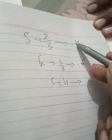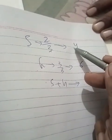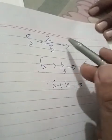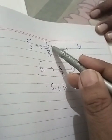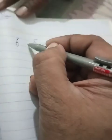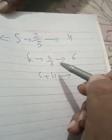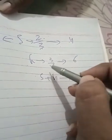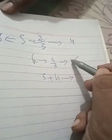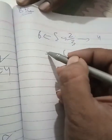So yeh bahut asan hoga. 3 se multiply karenge, 2 se divide karenge 4. So 4 ko 2 se divide karenge 2, 3 times 6. Sita ko lag gaye 6 days. Gita ko kitne din lag gaye? 6 ko 5 se multiply karenge, 3 se divide. 6 ko 3 se divide 2, 5 times 10.